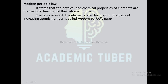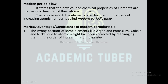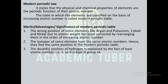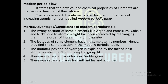The table in which elements are classified on the basis of increasing atomic number, or the table that follows the modern periodic law, is known as the modern periodic table. Advantages of the modern periodic table: the wrong position of some elements like argon and potassium, cobalt and nickel, due to atomic weight, has been corrected by rearranging them in the order of increasing atomic number. The isotopes of the same elements have the same atomic number, hence they find the same position in the modern periodic table. The doubtful position of hydrogen is explained by the fact of its least atomic number (one), so it is kept in group 1A. There are separate places for inert or noble gases, and for lanthanides and actinides as well.